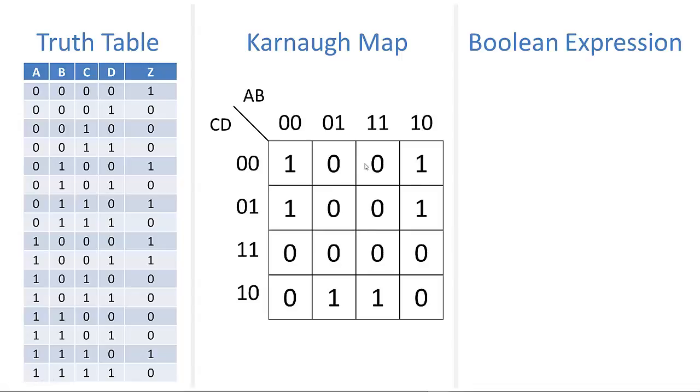Now we'll group all these ones. When I talked about wrapping, you see there's a one here and also here. We can draw a circle around these four ones in green that wraps around the edge of the table. That's a legitimate maneuver. Then we need another circle to cover these two ones. We've met all the rules. We can wrap around the edge or top of the table.